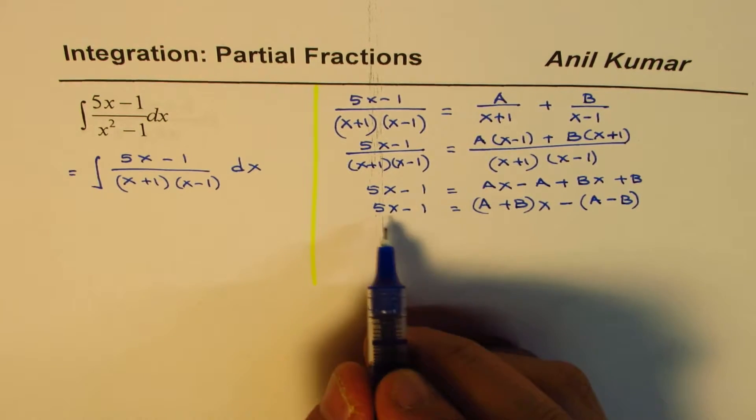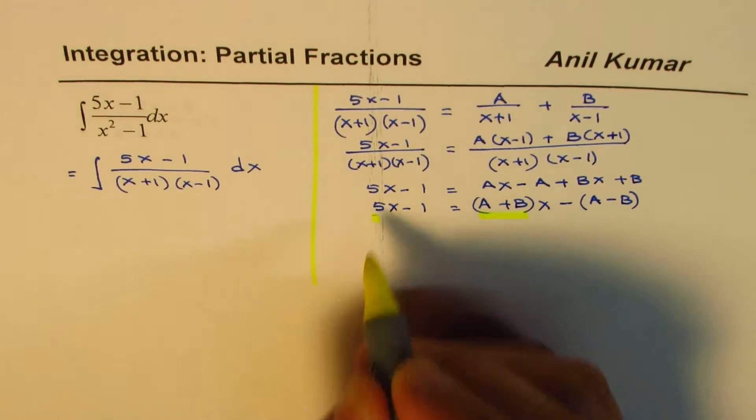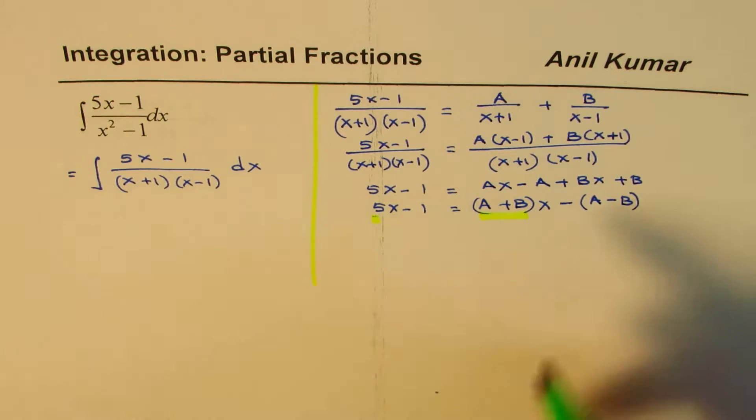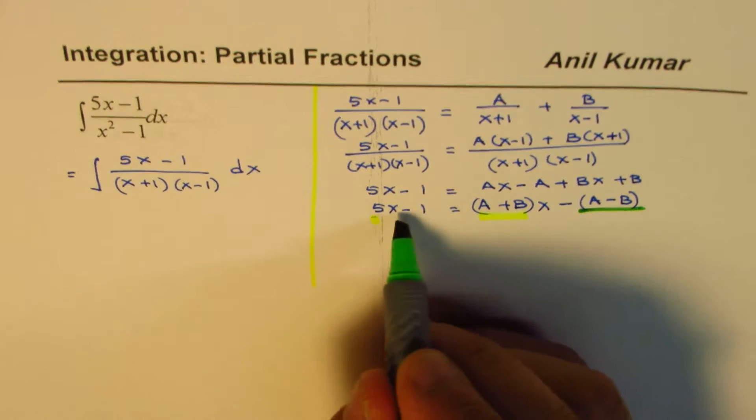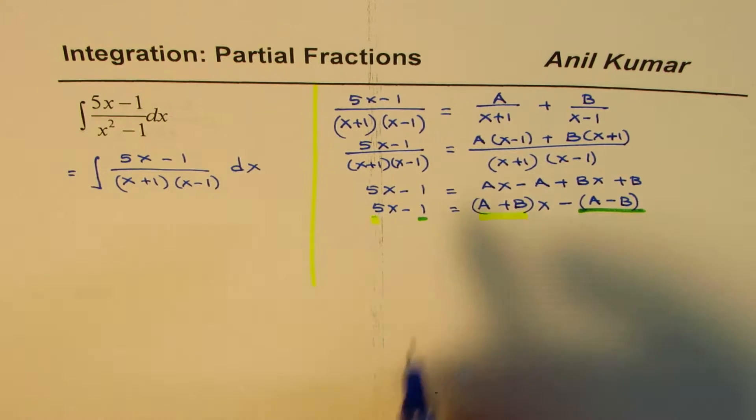So, comparing coefficients, that is to say, A plus B should be equal to 5, and A minus B should be equal to 1. This is minus in between anyway, so that should be equal to 1. That gives us two different equations.